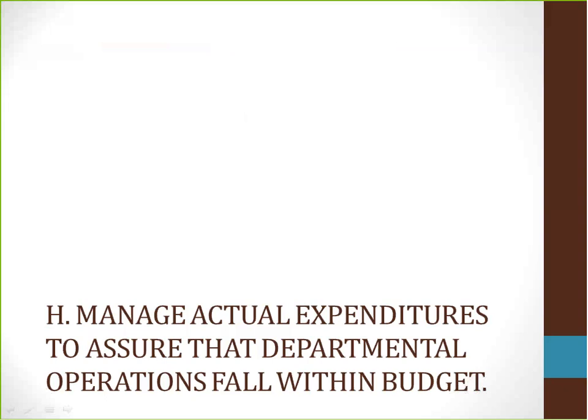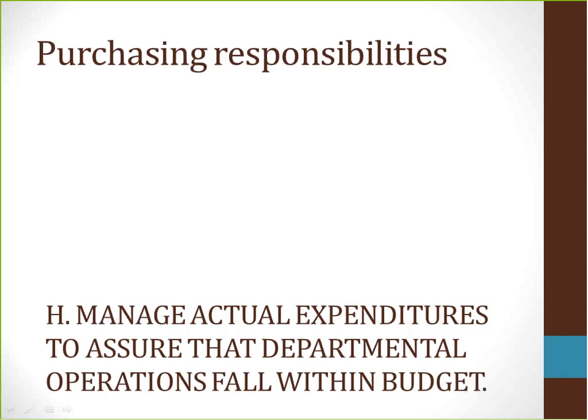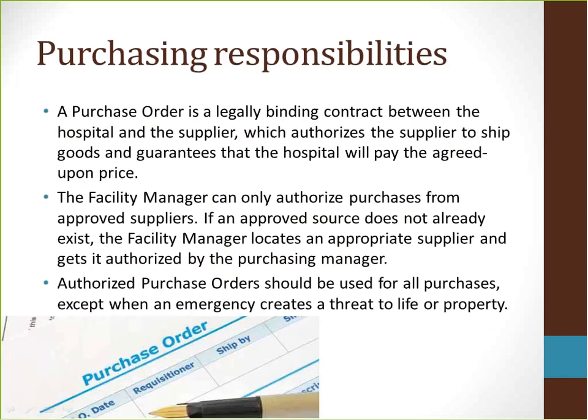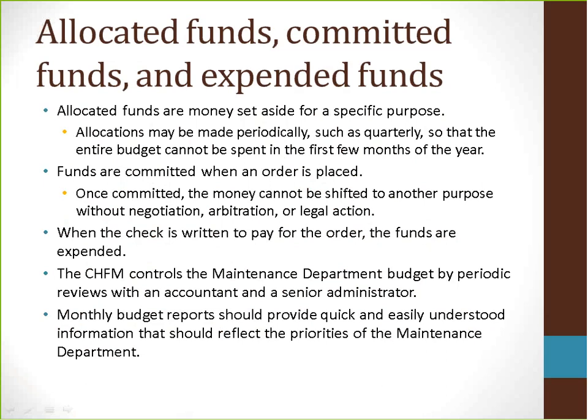Next, managing actual expenditures to assure that departmental operations fall within budget. A purchase order is a legally binding contract between the hospital and the supplier, which authorizes the supplier to ship goods and guarantees that the hospital will pay the agreed upon price. The facility manager can only authorize purchases from approved suppliers. If an approved source does not already exist, the facility manager locates an appropriate supplier and gets it authorized by the purchasing manager. Authorized purchase orders should be used for all purchases, except when an emergency creates a threat to life or property. Allocated funds are money set aside for a specific purpose. Allocations may be made periodically, such as quarterly, so that the entire budget cannot be spent in the first few months of the year.